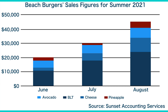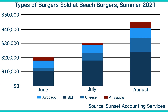You can karate chop each column into its component parts so that you can see how each type of burger contributes to the monthly sales figures. Now we need to update the title of the chart: 'Types of Burgers Sold at Beach Burgers Summer 2021.' Taking a look at the stacked column chart, the Bacon, Lettuce, and Tomato Burger is a clear favorite among customers.